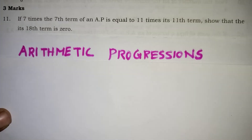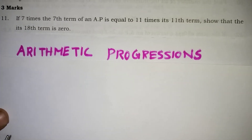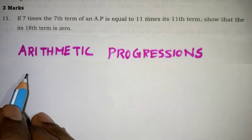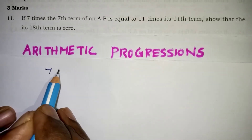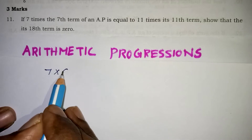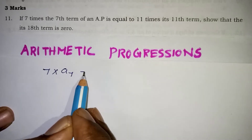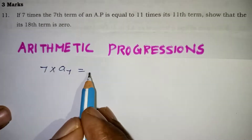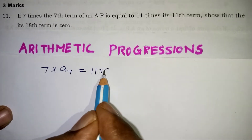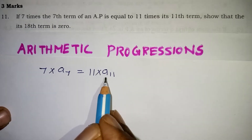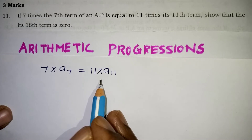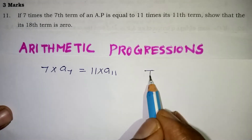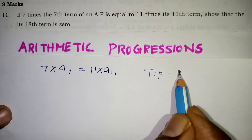First question: if 7 times the 7th term of an AP — that is 7 × A7 — is equal to 11 times the 11th term, so 11 × A11. Given this condition, we have to show that the 18th term is 0, meaning we need to prove A18 = 0.